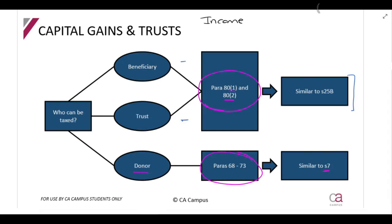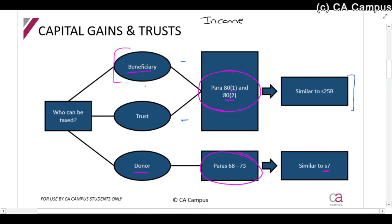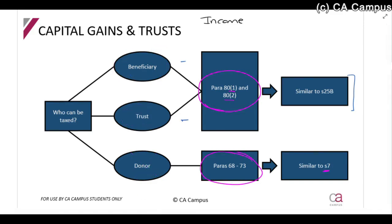If there's no donation, then the beneficiary or the trust must be taxed. If the beneficiary has a vested right, they typically get taxed. If the trustees decide to make a distribution to the beneficiaries, the beneficiary is taxed on it. If it's a capital gain but it's retained in the trust, the trust is taxed on it. All of these sections can be overridden if there is a donor and one of paragraphs 68 to 73 applies.